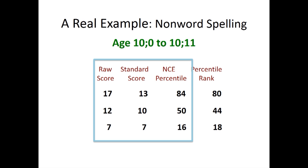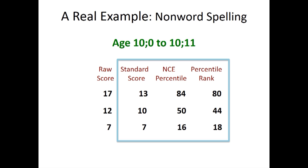Looking at age 10, we see the same relation between the standard scores of 13, 10, and 7, and the NCE percentiles of 84, 50, and 16. However, things have changed since age 7 in terms of the percentile ranks. At age 10, children's spelling scores are much more normally distributed. We can see this in the relatively even distribution of the raw scores. As a result, we see a closer correspondence overall between the NCE percentile scores and the percentile ranks at this age. These scores are not identical, but they are much closer than they were at age 7.